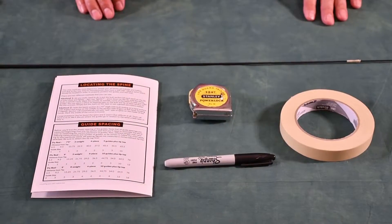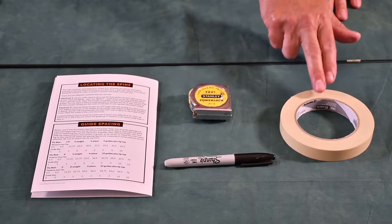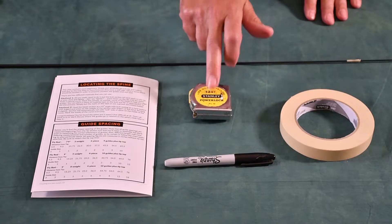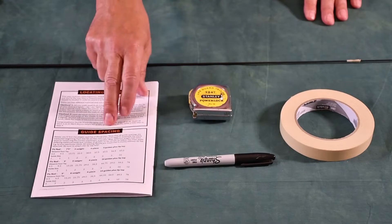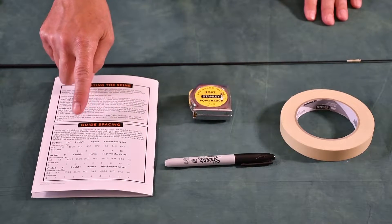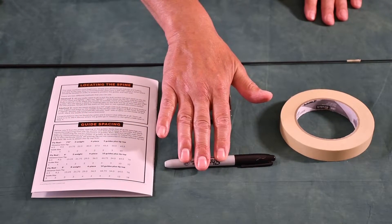Now that we have the blank assembled along the spine, we're going to measure and determine where each of the guides go along the blank. To do this correctly, we'll need the masking tape, tape measure, the guide spacing chart in the instructions, and a marking pen.